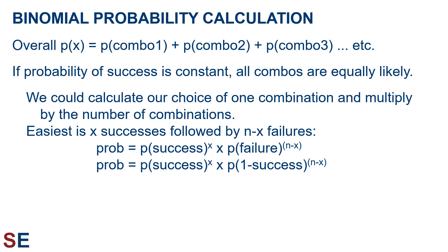If the probability of success is constant, all the combinations are equally likely. We can therefore calculate the probability of one combination and then multiply that by the number of combinations. The easiest combination is X successes followed by N minus X failures. This would be the probability of success raised to the X power times the probability of failure raised to the N minus X power. Since the probability of failure is 1 minus the probability of success, we get that the probability of X successes followed by N minus X failures equals p to the X times (1 minus p) to the N minus X.